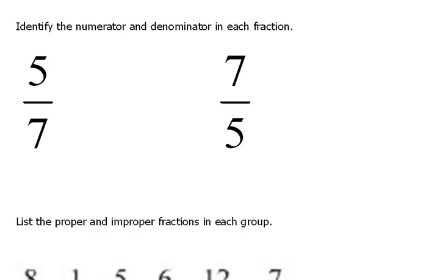So here we have the fraction 5 sevenths. This would be a proper fraction. The top number is always the numerator, and the bottom number is always the denominator.